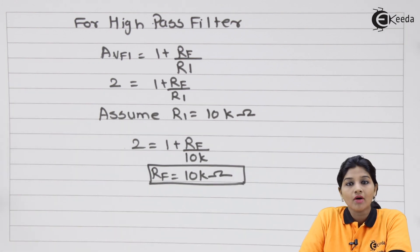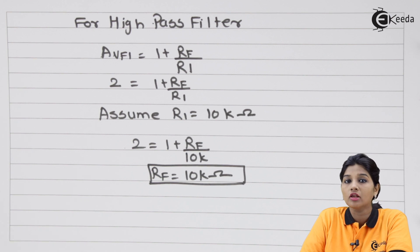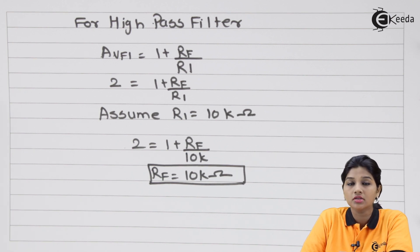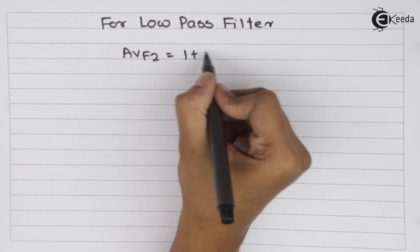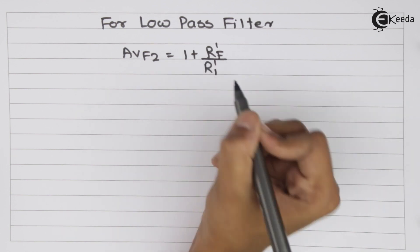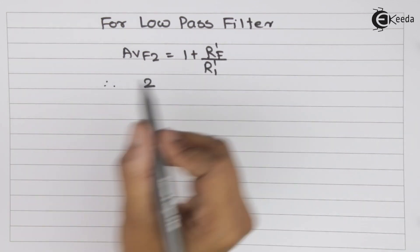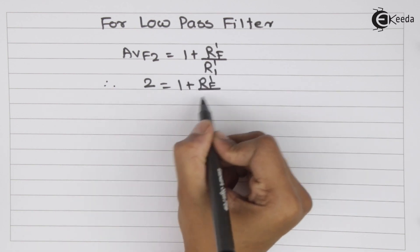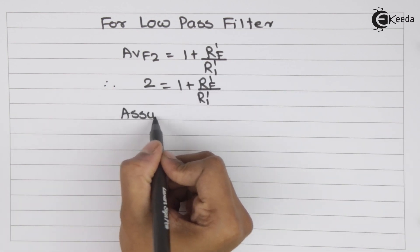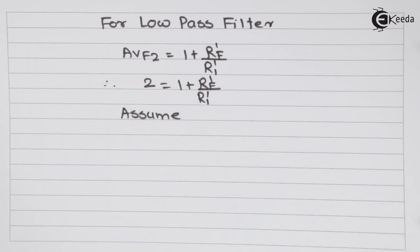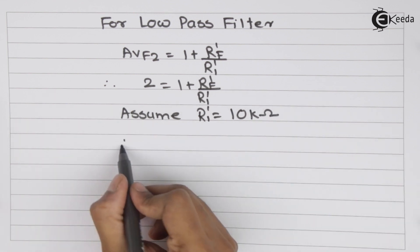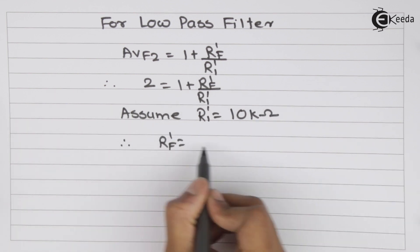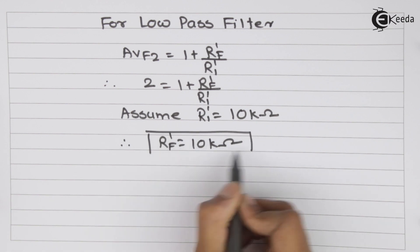Now let's calculate Rf-dash and R1-dash for the low pass filter. Avf2 equals 1 plus Rf-dash/R1-dash, and Avf2 is also equals to 2. Assuming R1-dash equals 10 kilo ohms, we get Rf-dash also equals 10 kilo ohms.